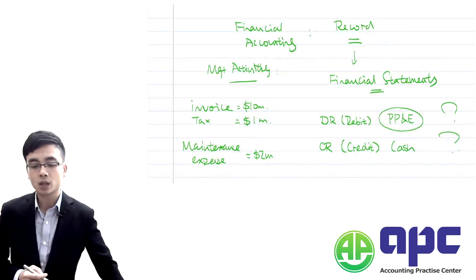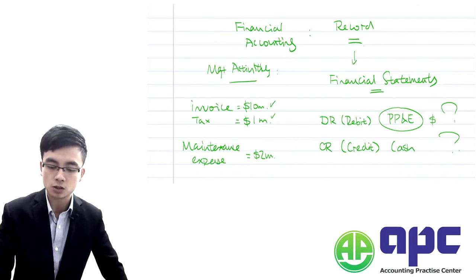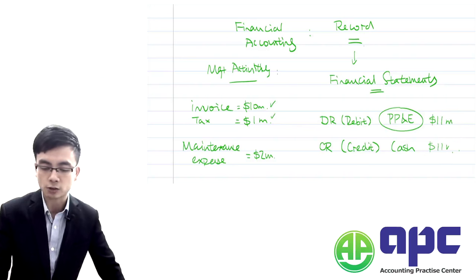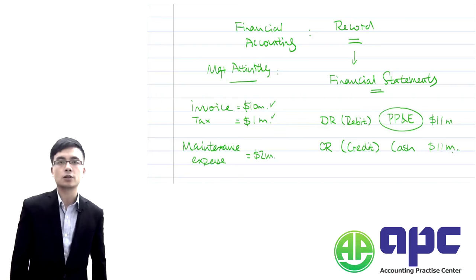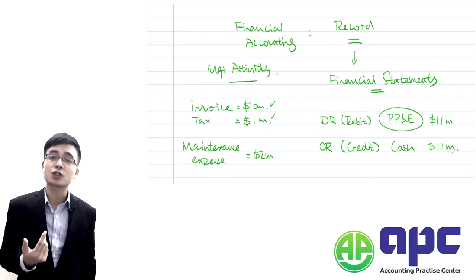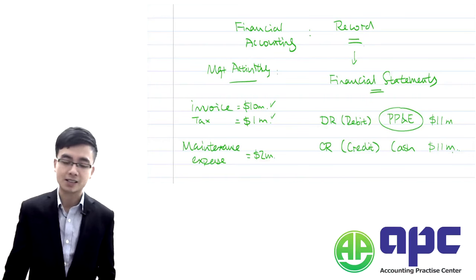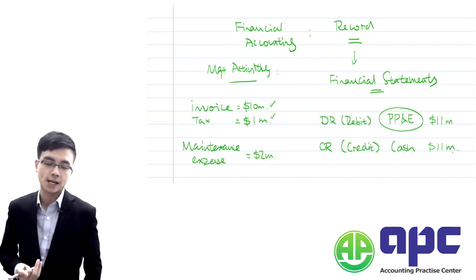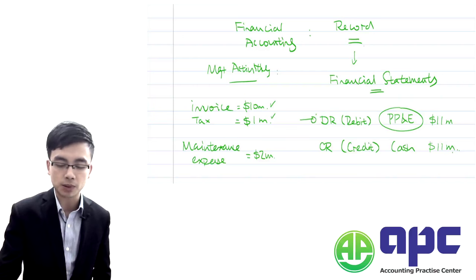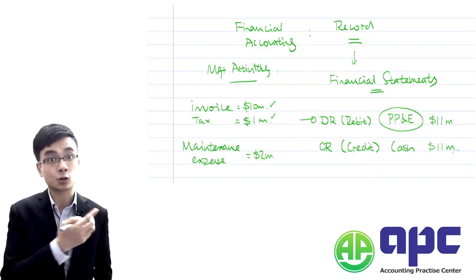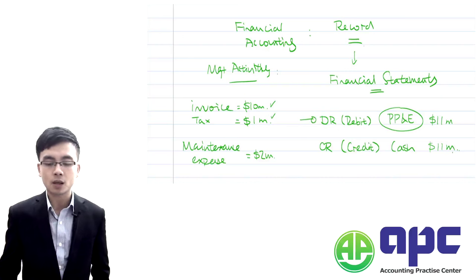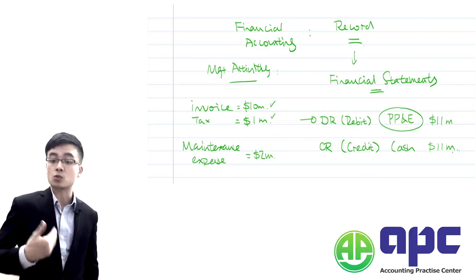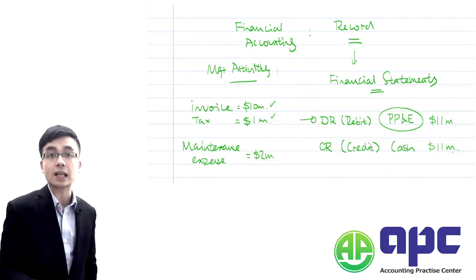In our example: the property, plant and equipment is priced at $10 million on the invoice; we also pay $1 million in import duties because we're importing it from India to Hong Kong; and we've signed a maintenance agreement with the supplier for $2 million annually. According to IAS 16 — Property, Plant and Equipment — we capitalise the PPE at $10 million plus $1 million, giving us $11 million as an asset.